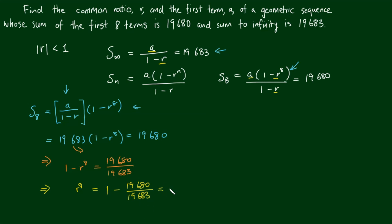Here's where we can do some factoring or simplification of the fraction. The top number I can write as 3 by 6560. The bottom number I can write as 3 by 6561. The threes cancel each other.